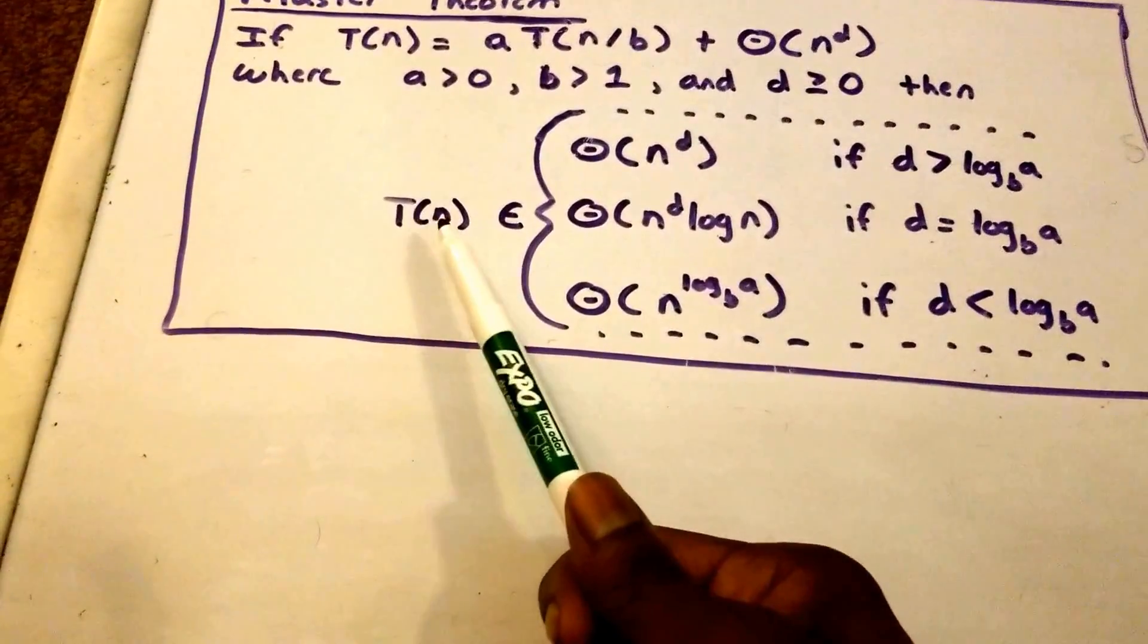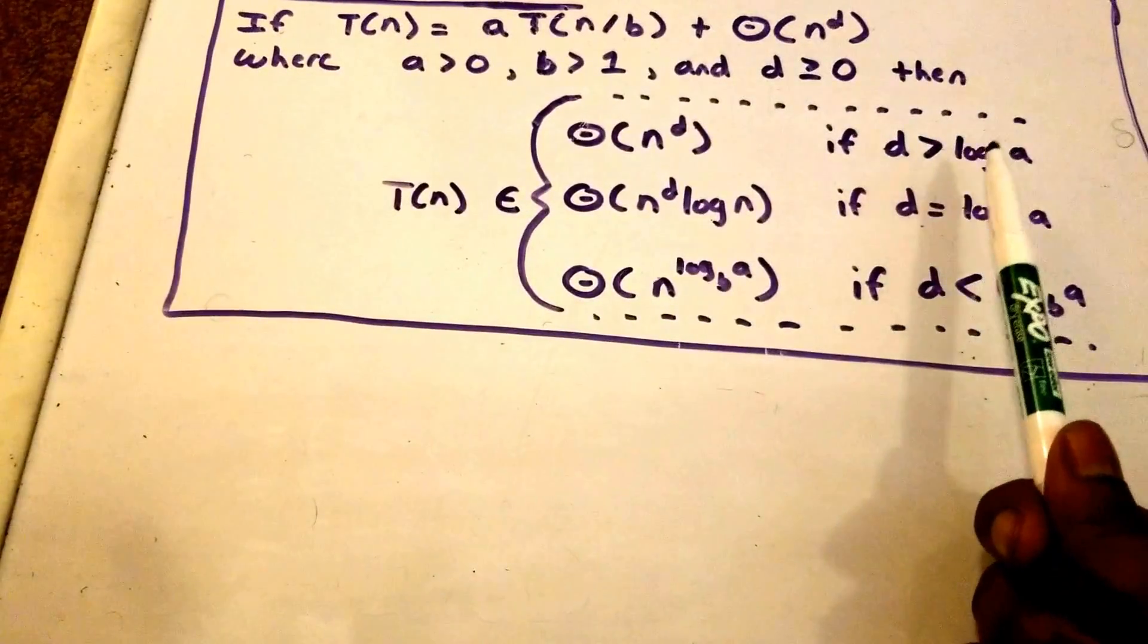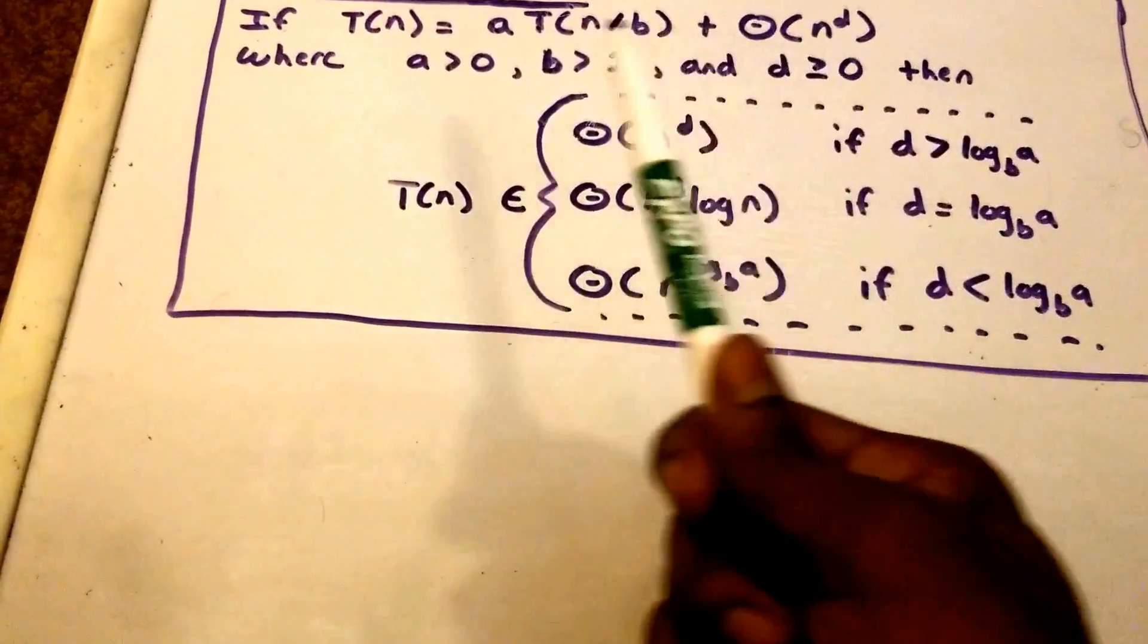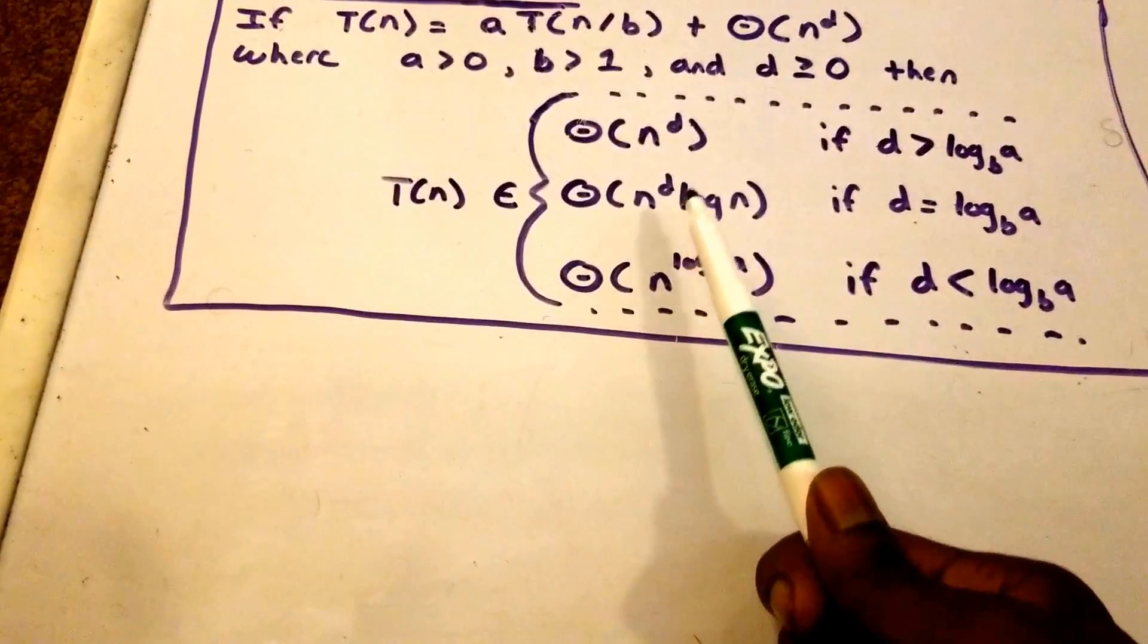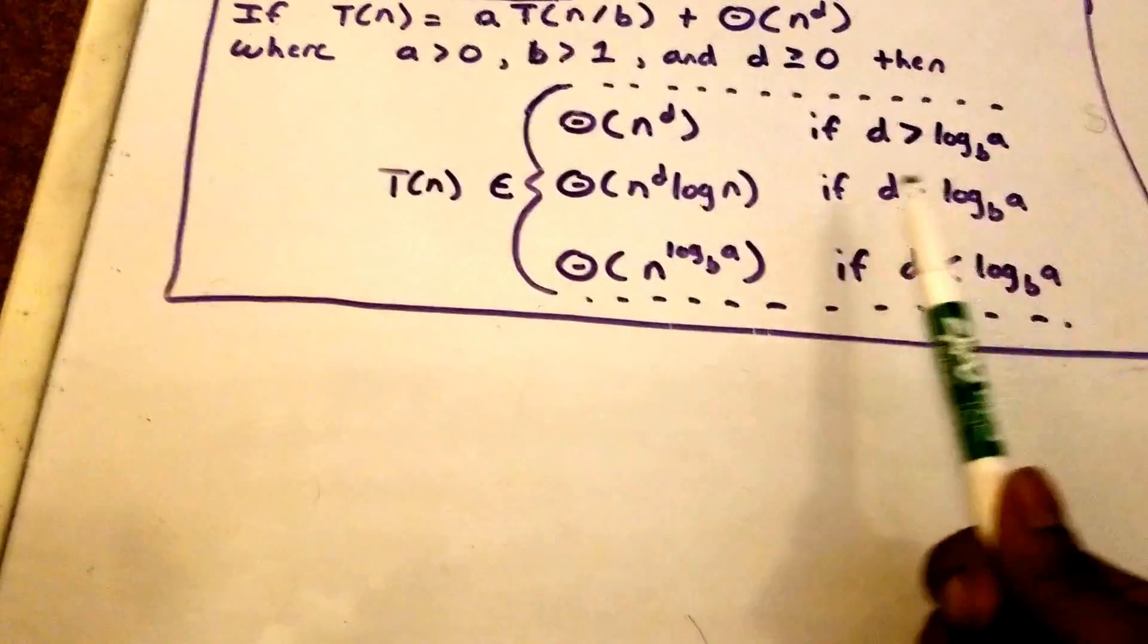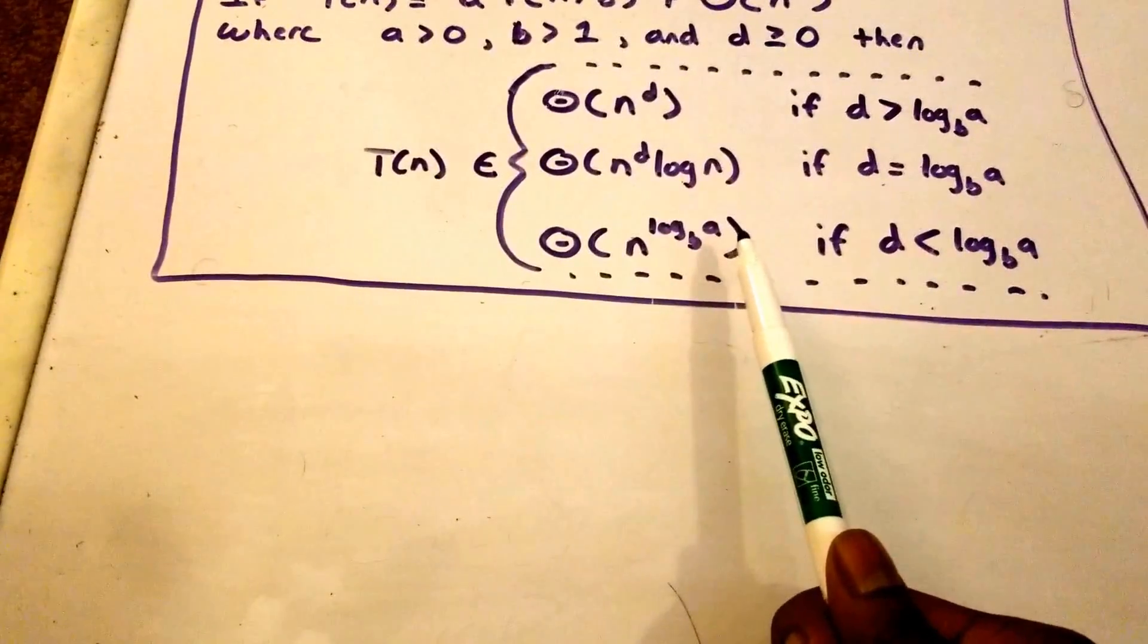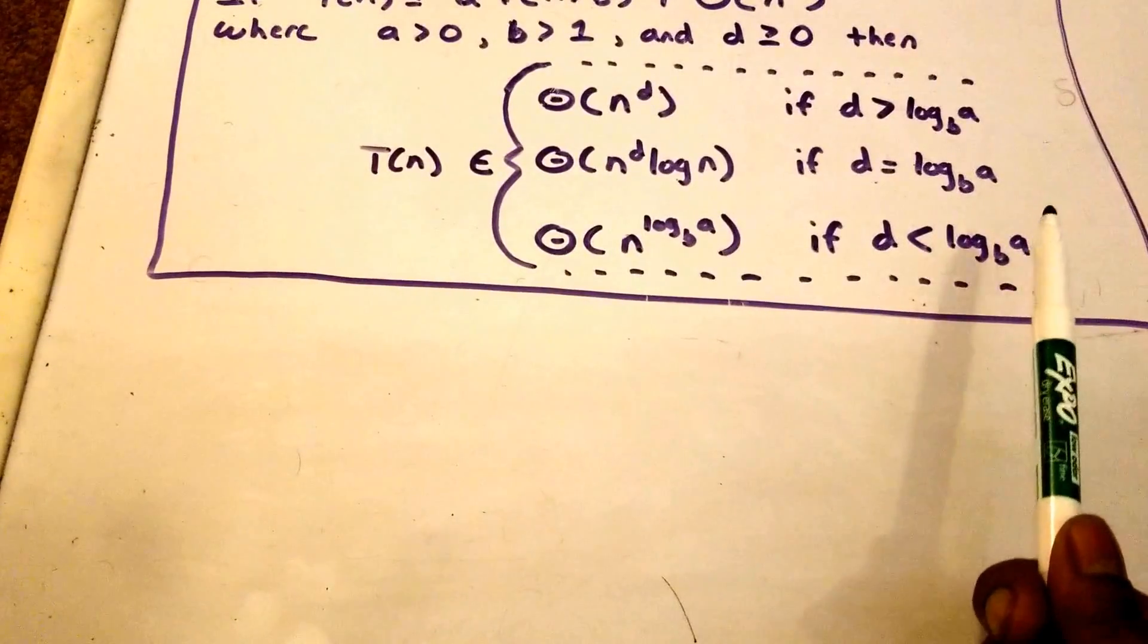Then our function T(n) belongs to theta of n to the power of d if d is greater than log base b of a. T(n) belongs to theta of n to the power of d times log n if d is equal to log base b of a. And T(n) belongs to theta of n to the power of log base b of a if d is less than log base b of a.